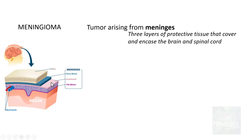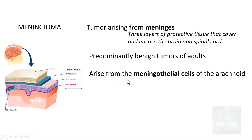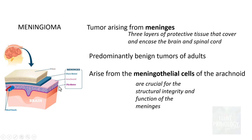Meningiomas are predominantly benign tumours occurring in adults. They arise from the meningothelial cells of the arachnoid layer — not the dura, not the pia — predominantly from the meningothelial cells of the arachnoid. These meningothelial cells are crucial for the structural stability and function of the meninges.